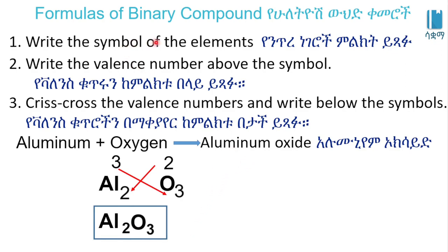This is the Al2O3. This is the formulas of binary compound to show the aluminum oxide formula.